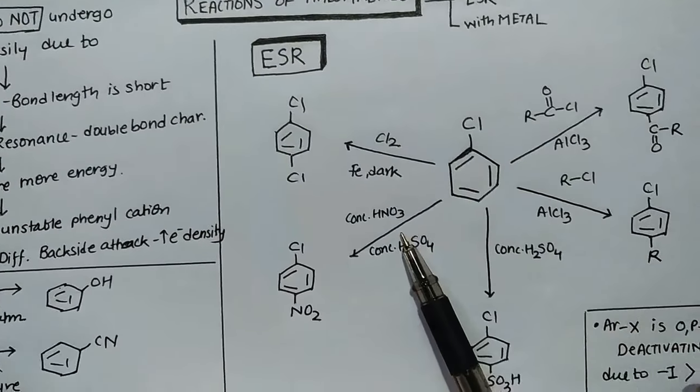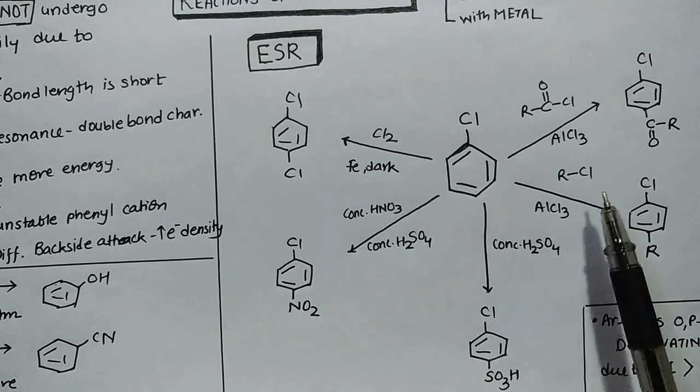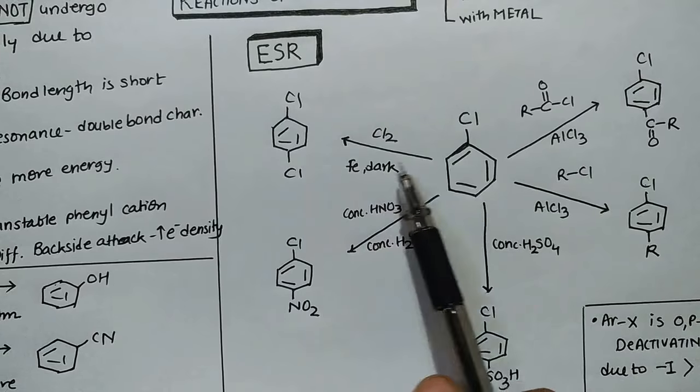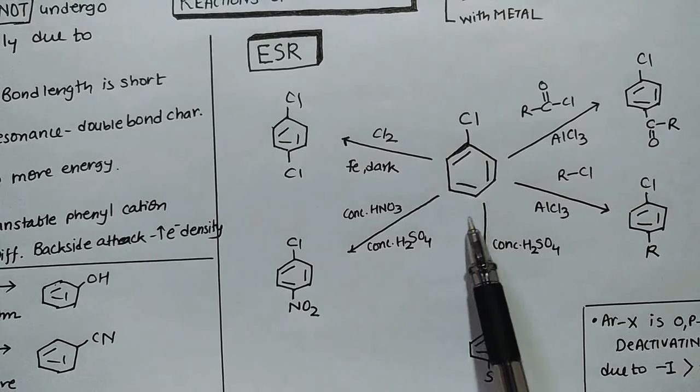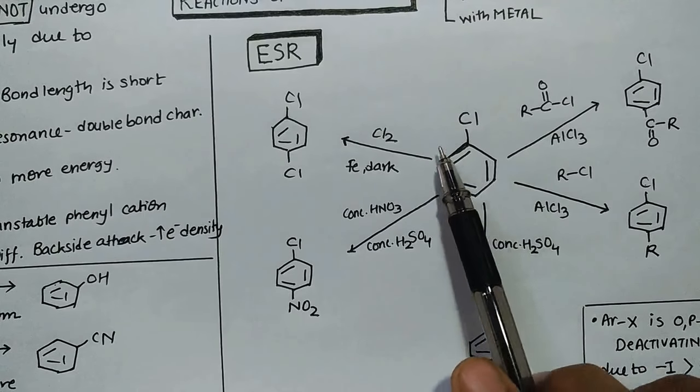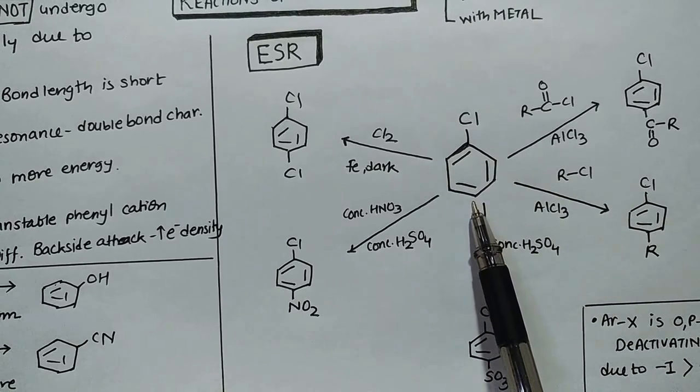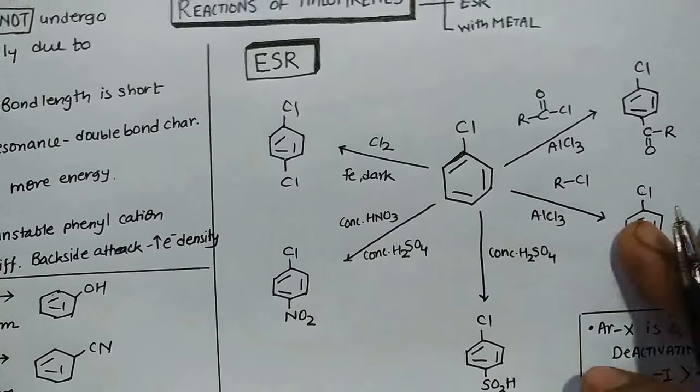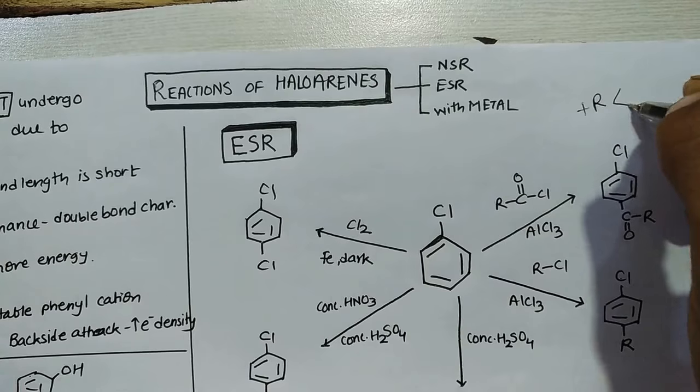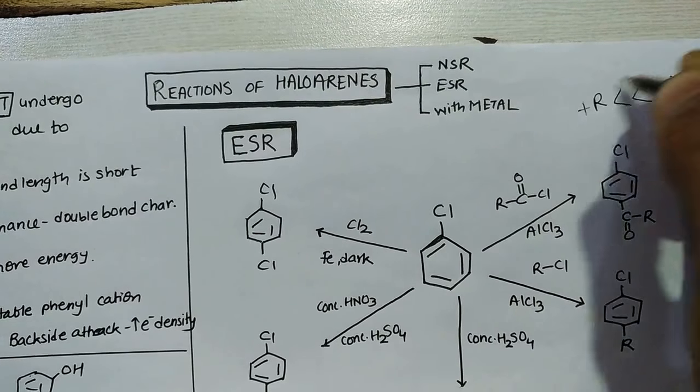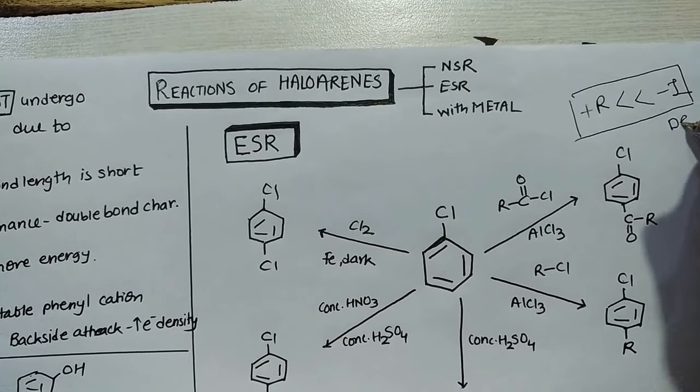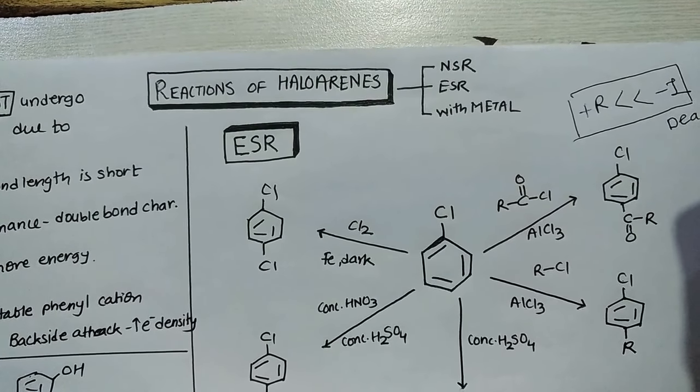You know very well benzene ring has five ESR reactions: halogenation, nitration, sulfonation, Friedel-Crafts alkylation, and Friedel-Crafts acylation. You know chlorobenzene belongs to that group which is ortho-para director but is a deactivator. Chloro has plus R effect but its minus I effect is much greater, which is why it comes in the deactivator category.